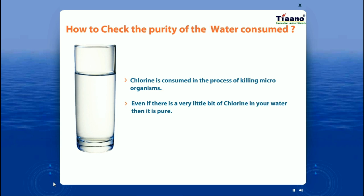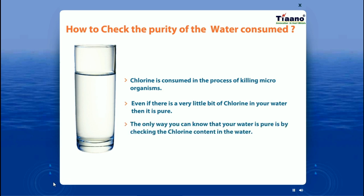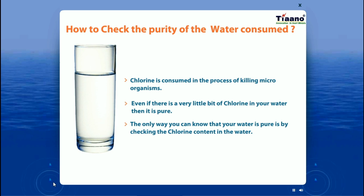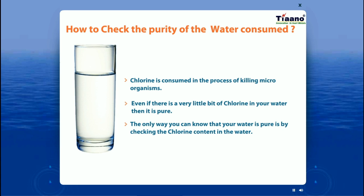This water source is most often contaminated by sewage discharge. Chlorine is consumed in the process of killing microorganisms. The only way to know that your water is pure is by checking the chlorine content. A small amount of residual chlorine indicates purity — its presence confirms that all pathogens have been killed and helps prevent bacterial recontamination.